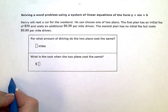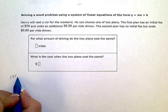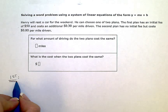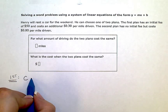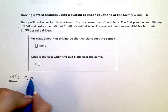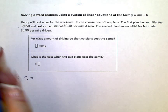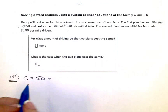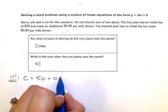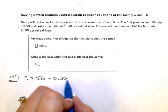So the first plan, if I write an equation to represent the first plan, the total cost of the plan would be equal to the initial fee of $50 plus $0.30 for every mile driven. So 0.30 per mile.